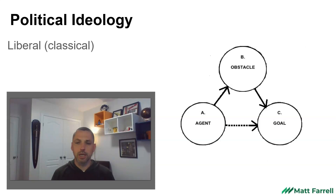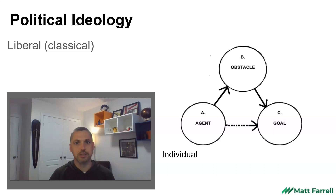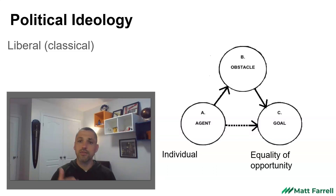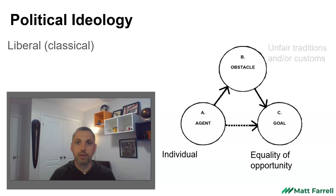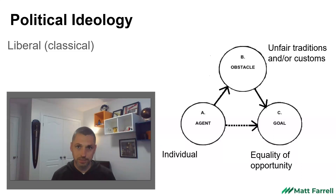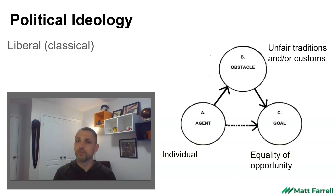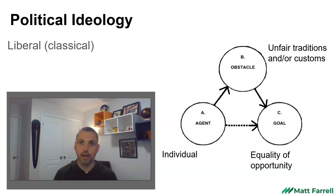Now liberalism. There are a couple of different streams and it's important to understand the difference. Classical liberalism focuses on the individual — the goal is that every individual should have freedom of choice and equality of opportunity, free to do what they want with their life. However, the things standing in the way are unfair traditions and social customs, such as aristocracy, hereditary title, and peerage. Individuals should not be assigned to a certain school based on their accent or postal code — that's what classical liberals see as unfair.